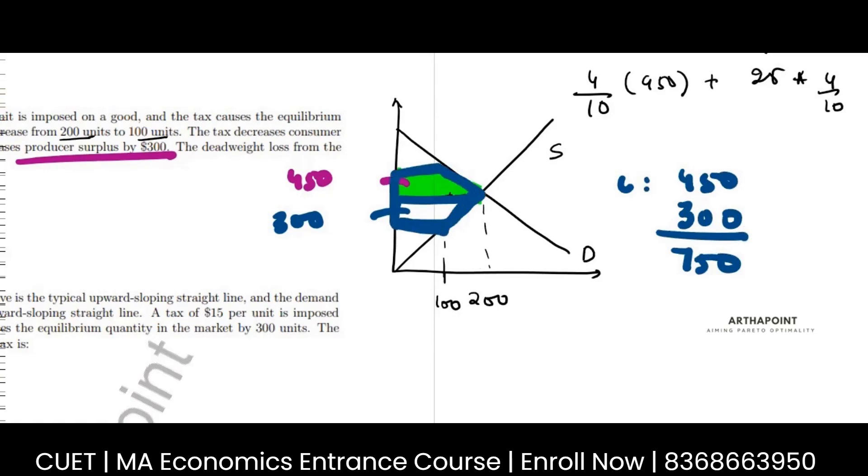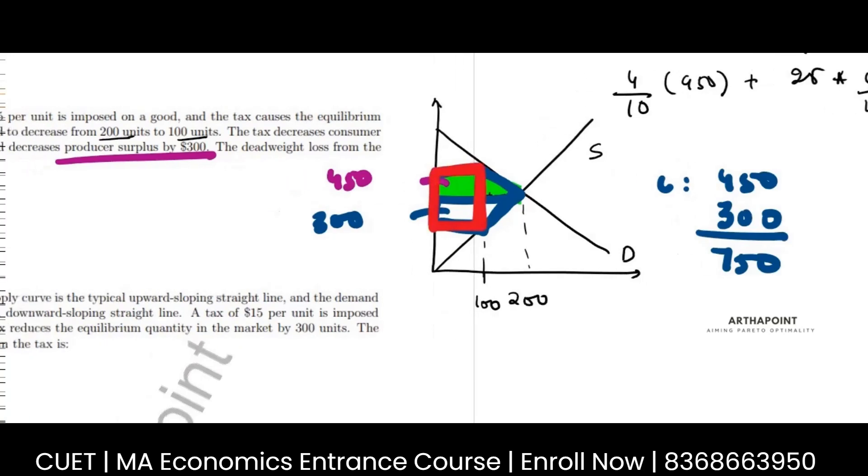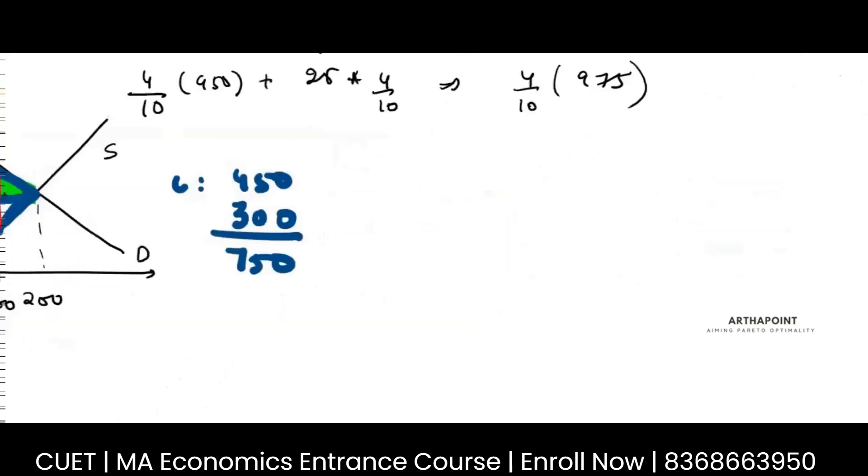Now out of this area, if I just subtract the area of this rectangle, I will get the area of the triangle. And what is the area of the rectangle? This rectangle is nothing but the tax collected. So if you just go back and remember the diagram I made,